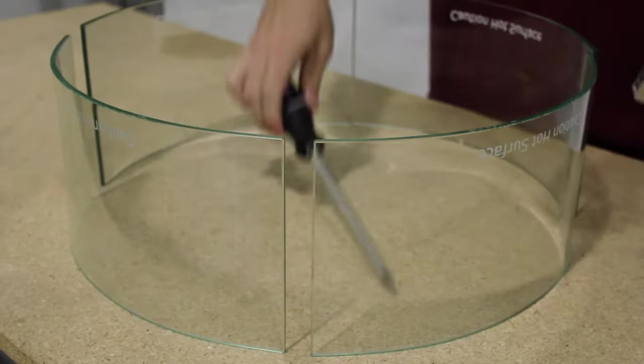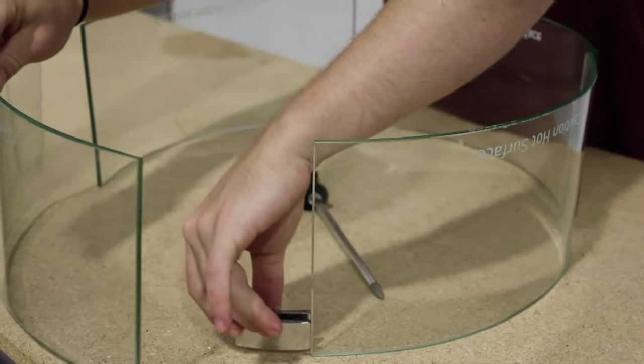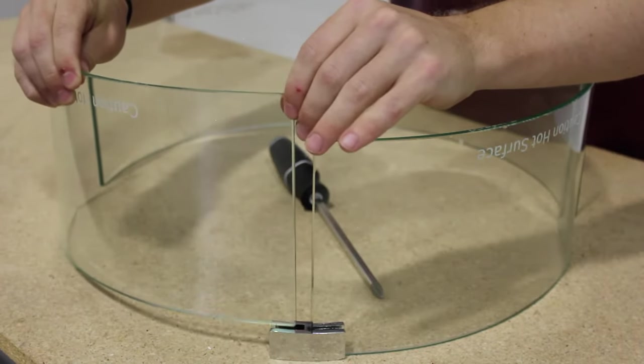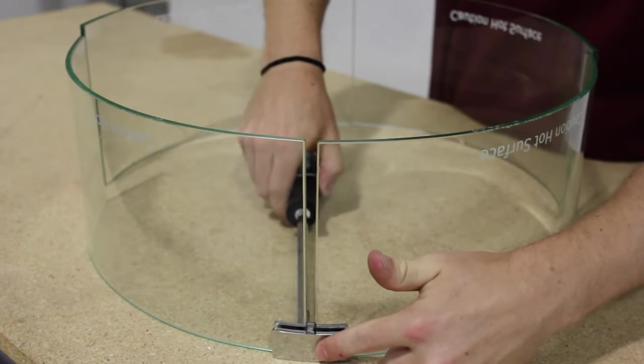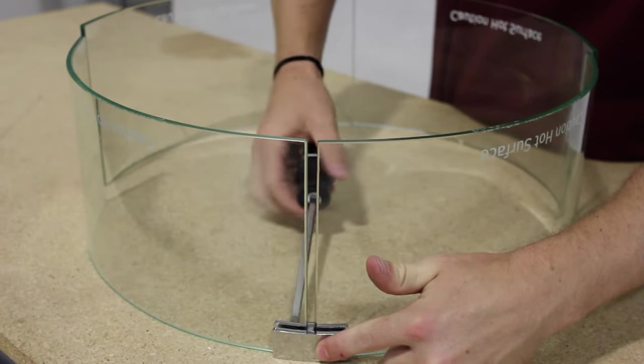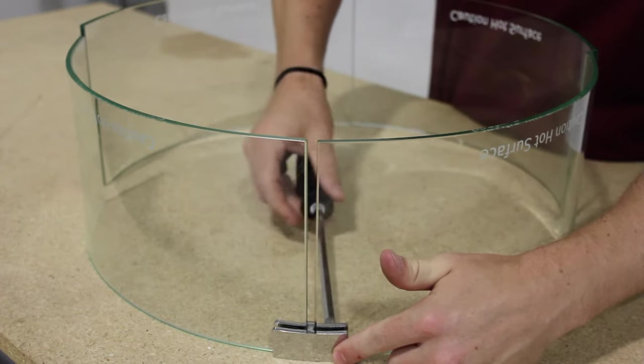Once your panels are assembled in a circle, connect your first of the top connectors to two glass panels. Doing this upside down will keep the top of your flame guard level. When screwing the connector in place, leave the screws with a loose fit for now.